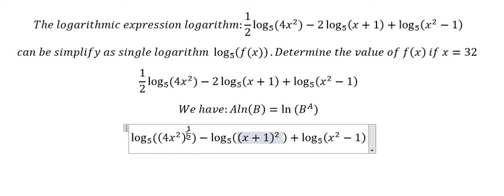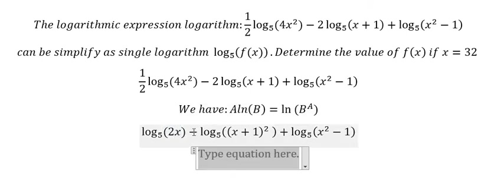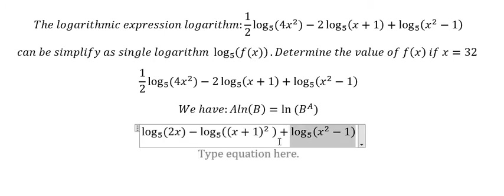We know that this one will simplify into 2x. Next we have the negative, so this means 2x divided by this one, and this one multiplied with x² - 1, and that should be like this.